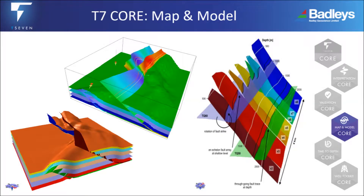T7Core map and model allows you to effortlessly build and respect structure, a tool developed with real geological structure in mind. T7 handles reverse geometries with ease, allowing for multiple Z horizons and complex fault and horizon geometries, giving you the ability to build an earth-typed, three-dimensionally consistent model as you interpret.